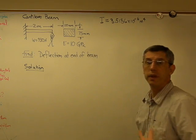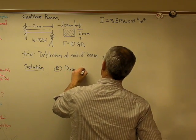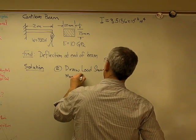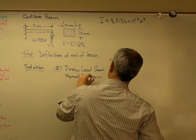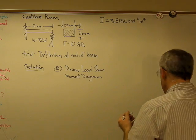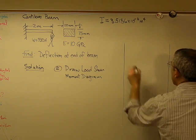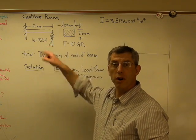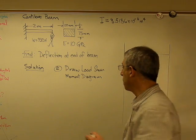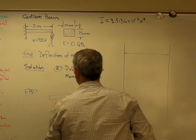Now the next thing we're going to need to do is draw the load shear moment diagram. And that's a pictorial representation of the shear and the moment along the beam. So let's do that real quick. We're going to have to fit this into the space here. Now in order to draw the load shear moment diagram, we're going to have to draw a free body diagram with the beam. So let's just draw that out here real quick. FBD for free body diagram.